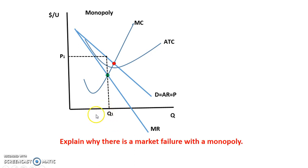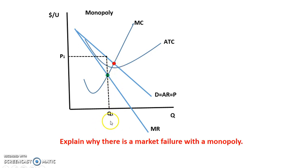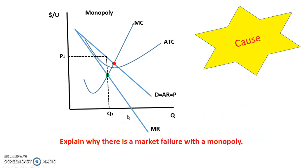That, however, is not the answer to the prompt. They're asking to explain why there is a market failure, not what is the market failure. Explaining that they're not producing at the allocatively efficient amount is going to be more of the effect of the market failure instead of why there is a market failure. So you need to think about the cause. What causes market failure?